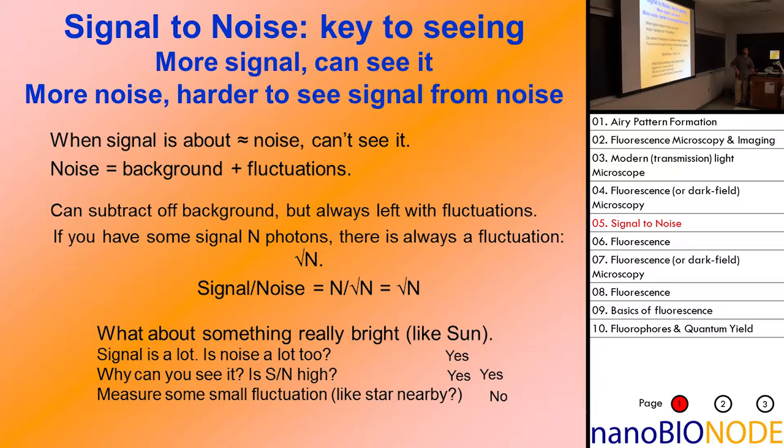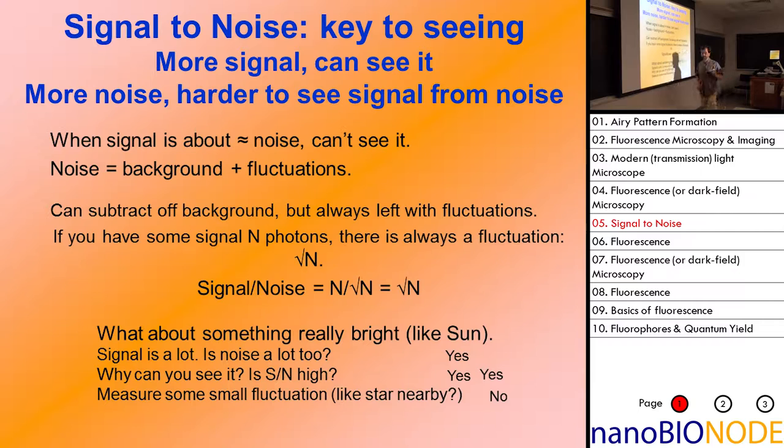What we've done, the important point is the signal to noise. More signal, you can see it. More noise, it's harder to see the signal from the noise. When the signal is about equal to the noise, it's hard to tell if there's anything there. The noise comes from two sources. One is just background. And the other comes from fluctuation in the signal. There is an inherent fluctuations in the signal.